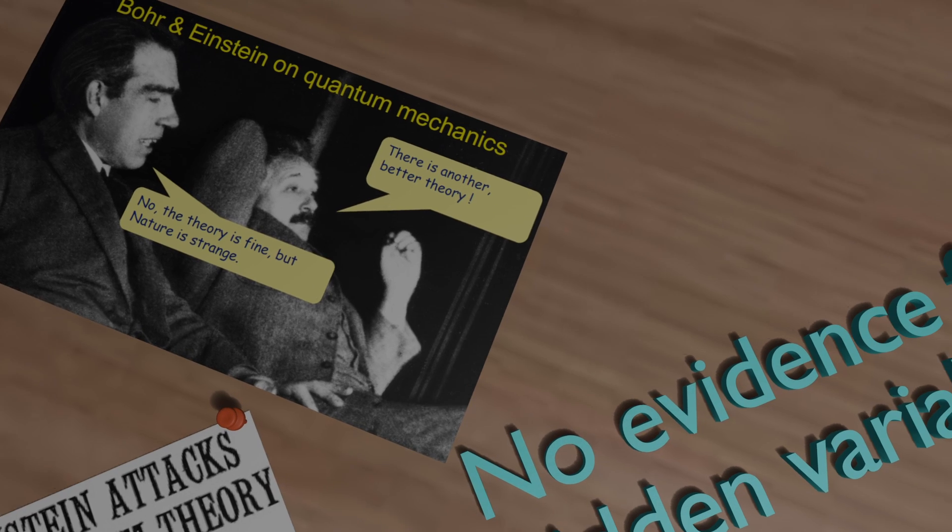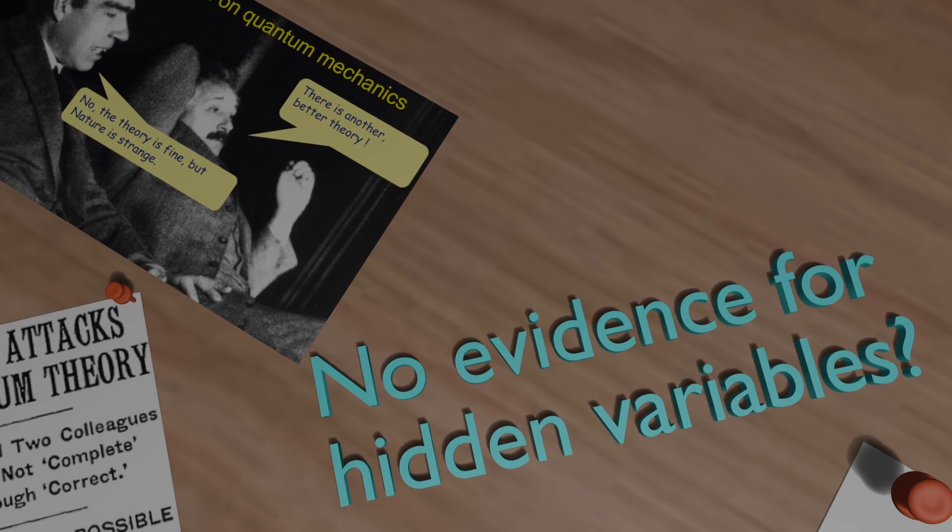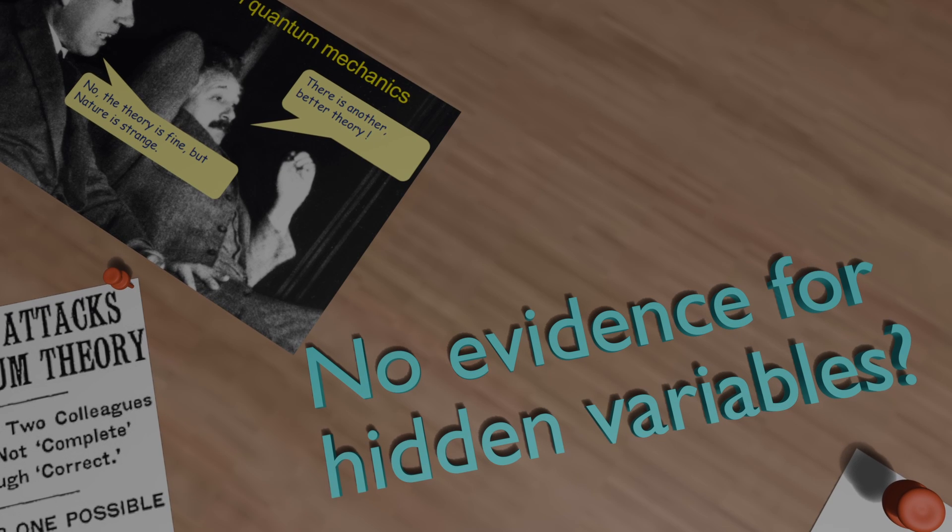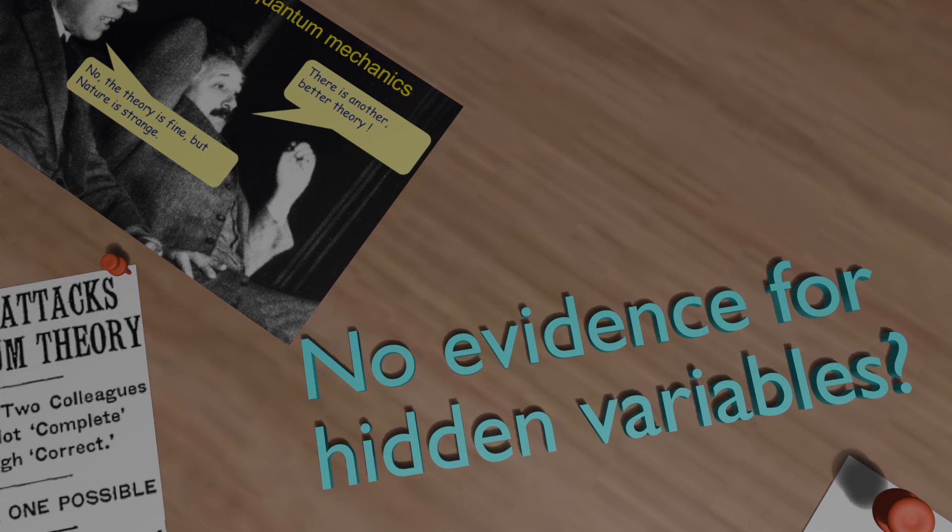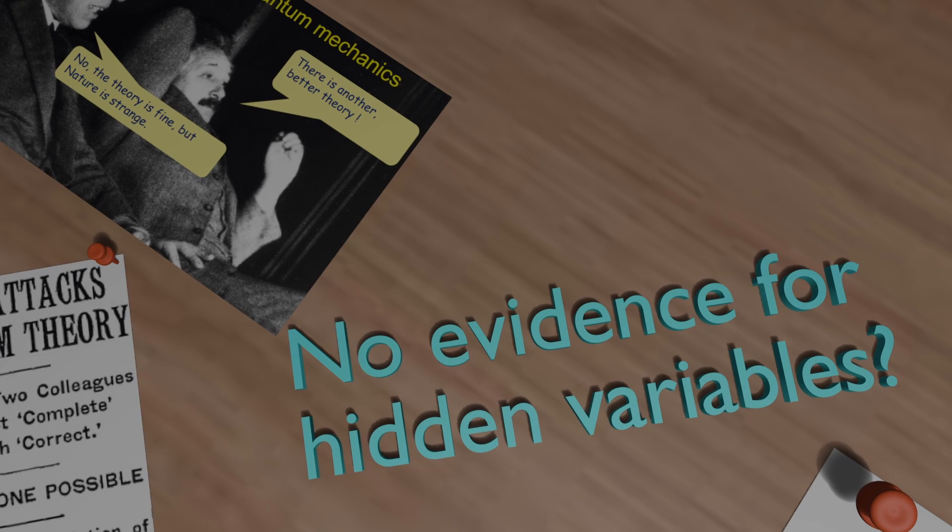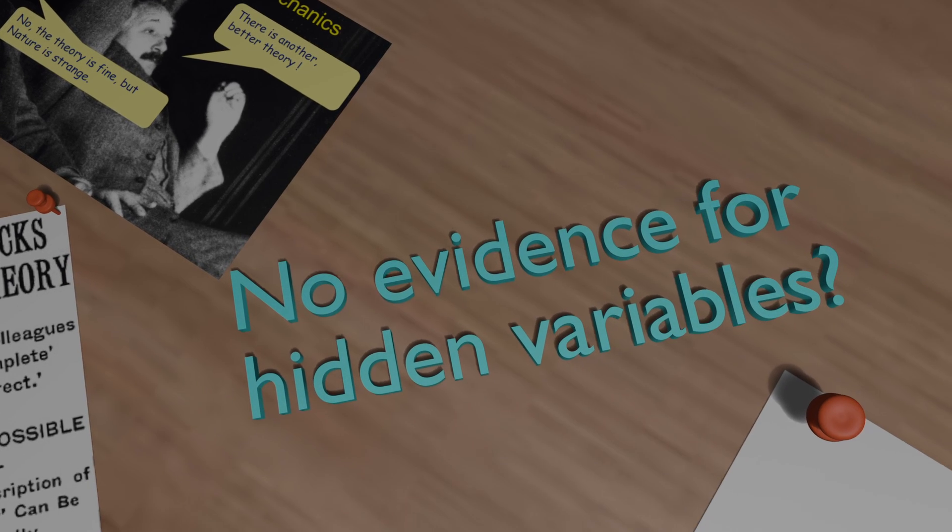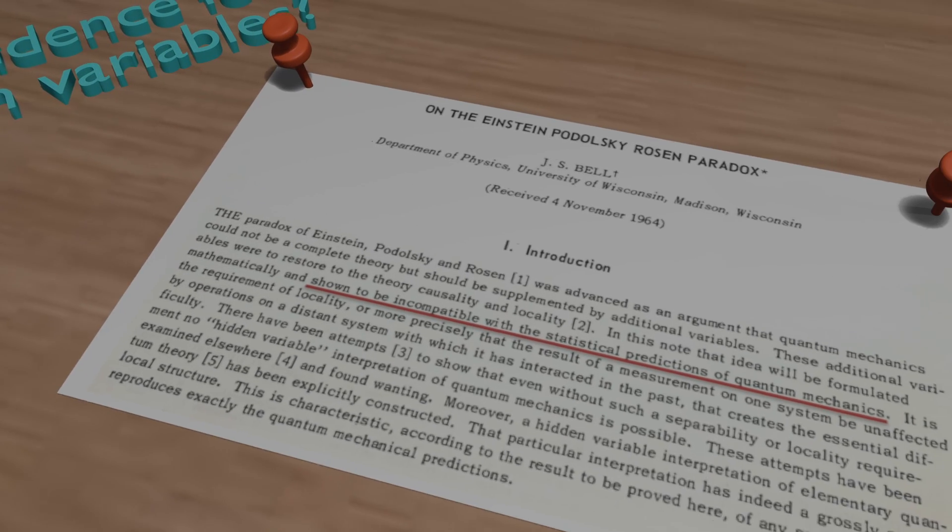Bell wanted to settle this debate once and for all. He realized that while the EPR paper made a strong case for hidden variables, there was no clear experimental test that could definitely show whether quantum mechanics was correct or whether local realism still held. So Bell set out to provide a framework for testing this fundamental question.